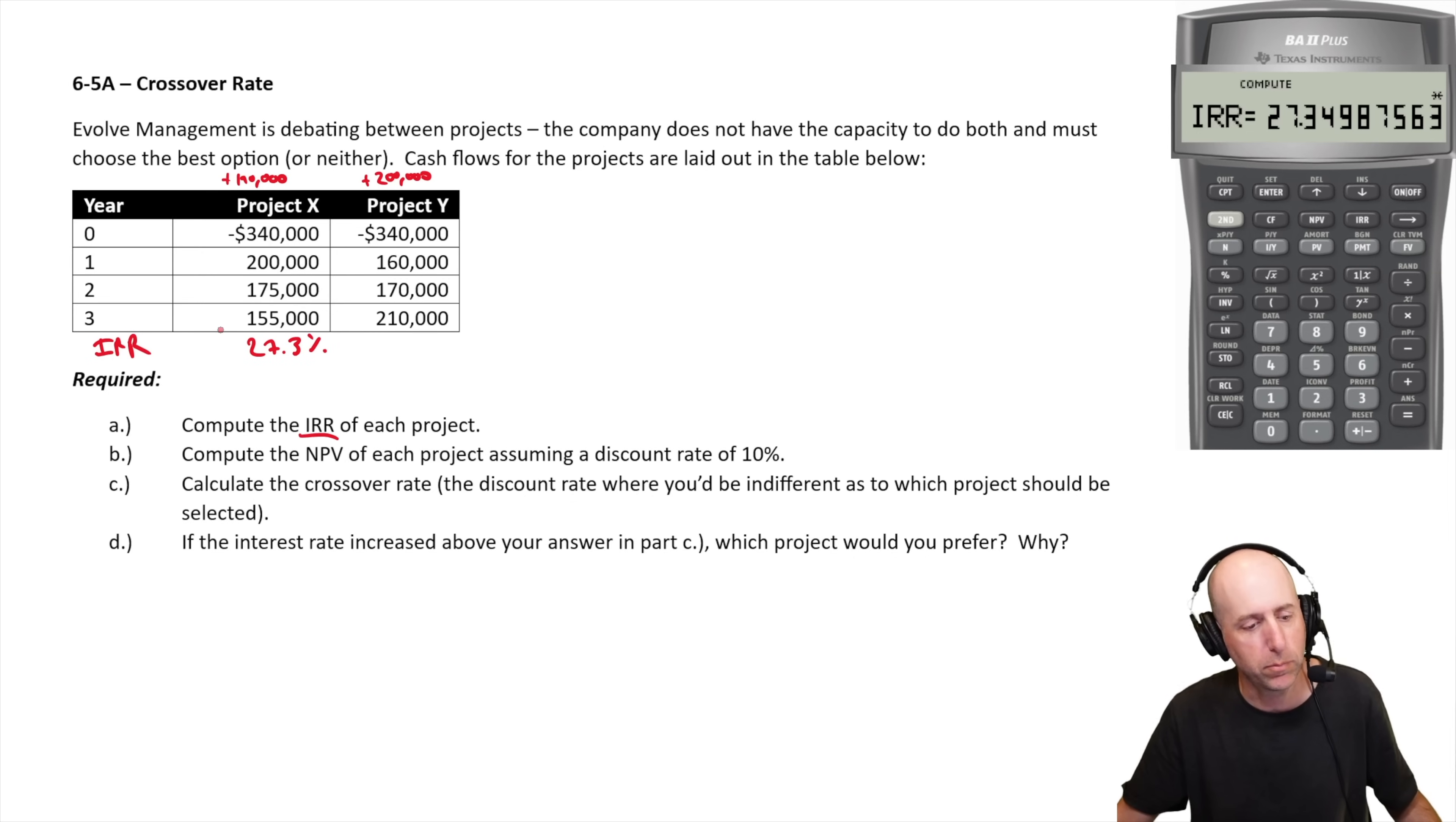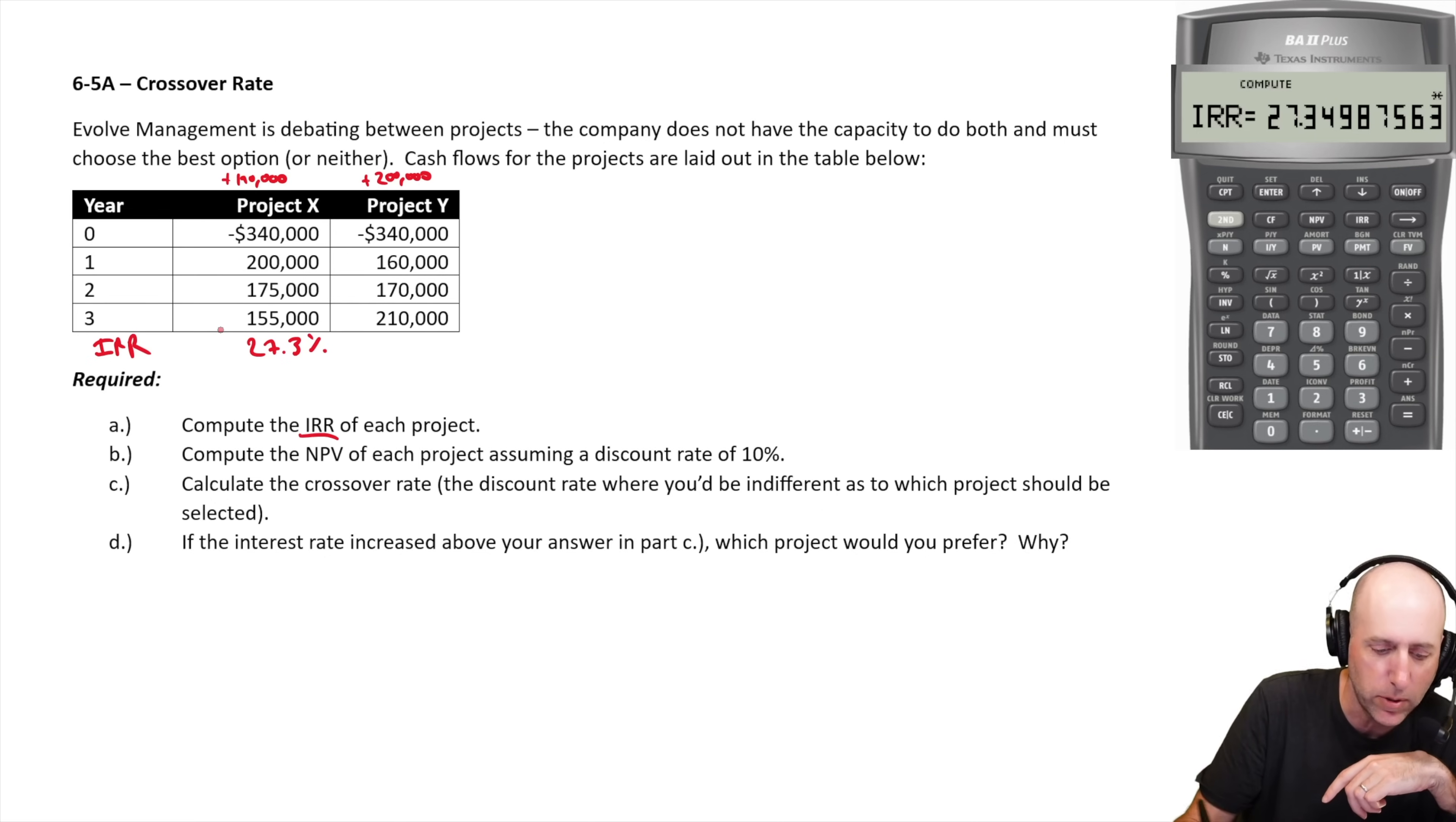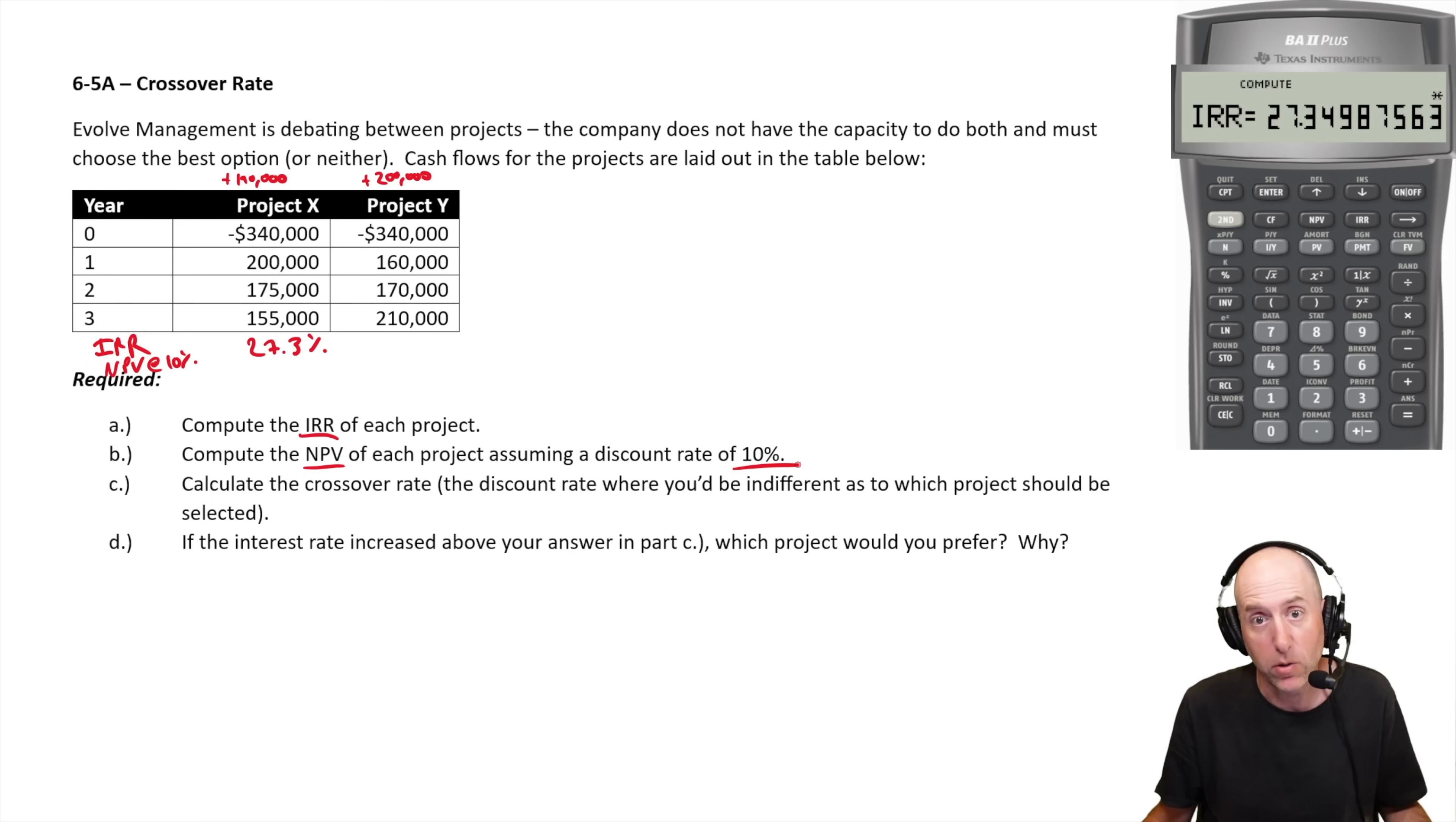What's the IRR of, well actually, before I do IRR of project Y, I've got all those numbers in my calculator. Let's do the NPV at 10%, which is part two, assuming a discount rate of 10%, what's the net present value? It's going to be a big number, and it's going to be positive. How do I know it's a big positive number? Because my IRR is 27%. If my discount rate's 10, it's got to be positive.